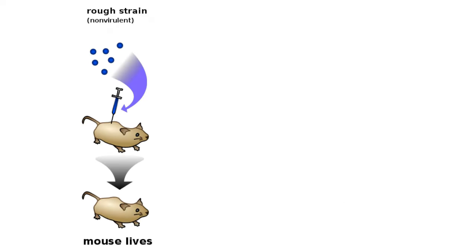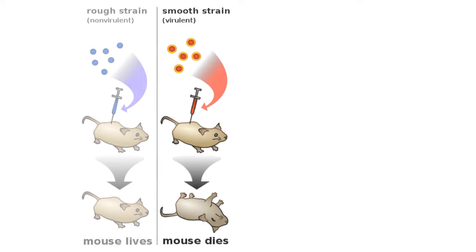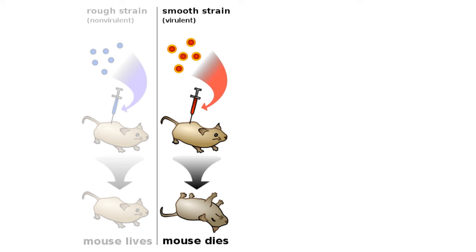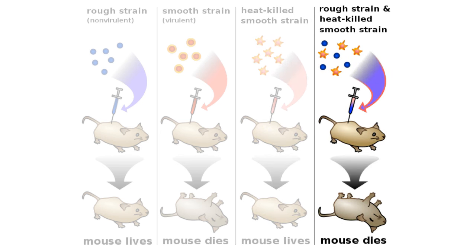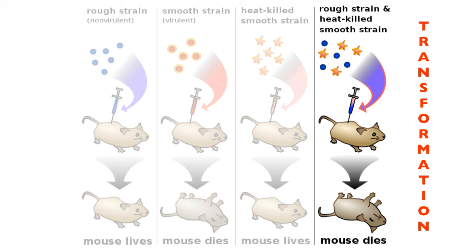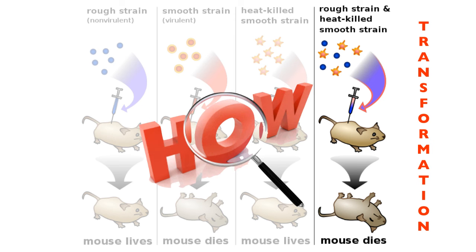Here's how it works. Injecting the rough non-virulent strain into a mouse — no problem. Injecting the smooth virulent strain — the mouse dies. If you heat-kill the smooth strain first, the mouse will live. But here's the perplexing one: if you mix the rough strain and the heat-killed smooth strain together and inject it, the mouse dies. So a transformation took place — the rough strain was transformed in some way by the heat-killed smooth strain. The question was: how did that happen?